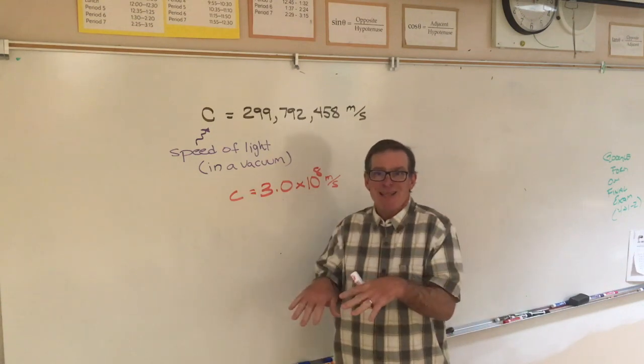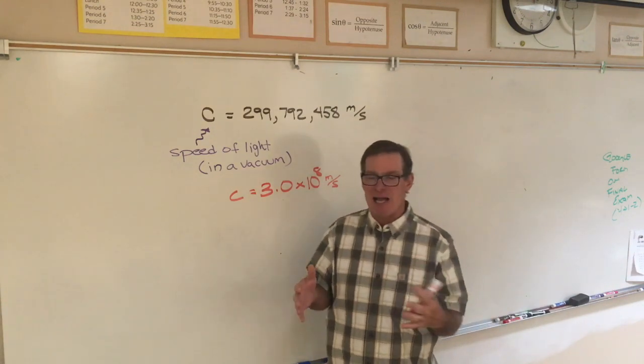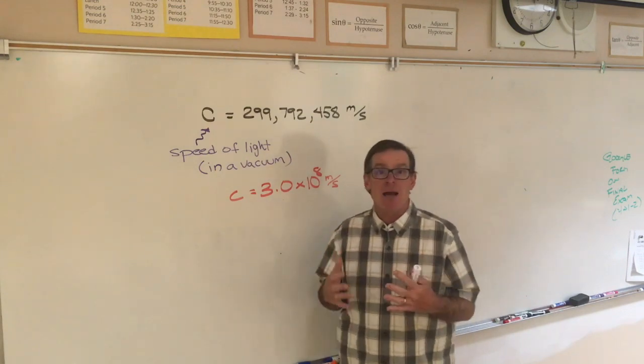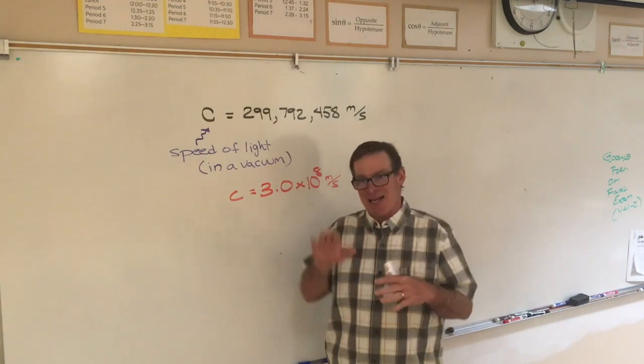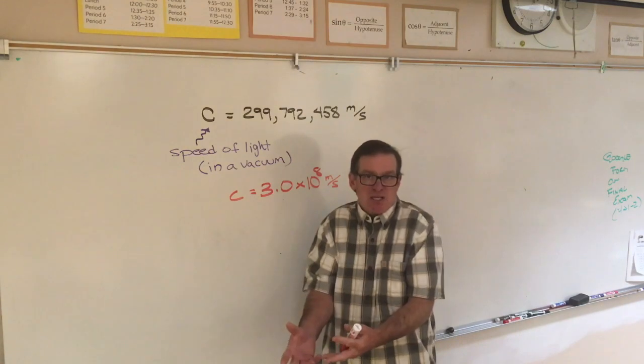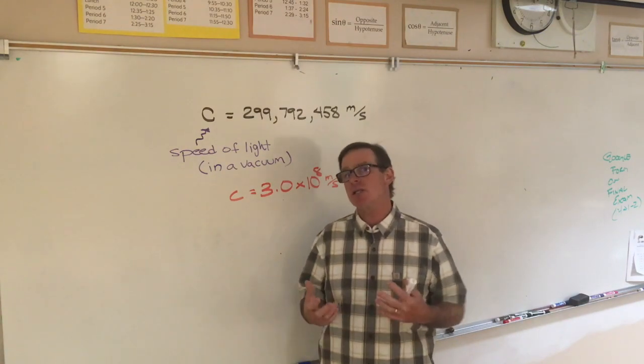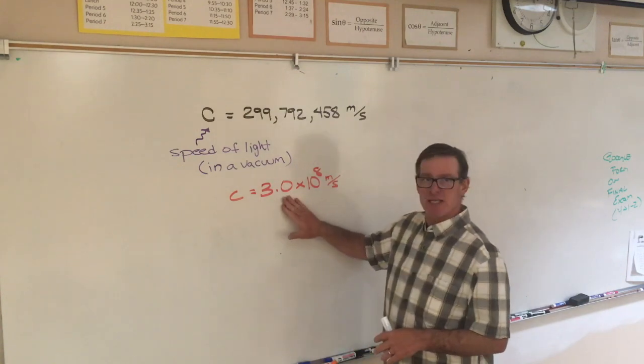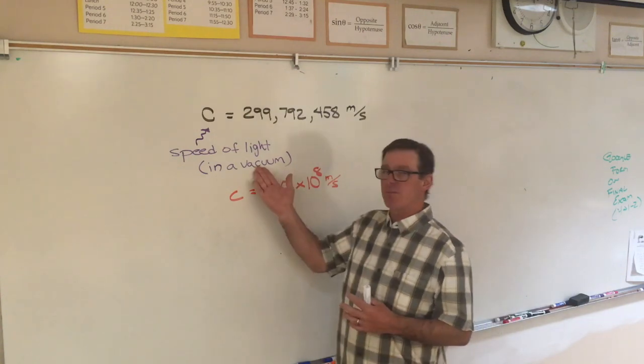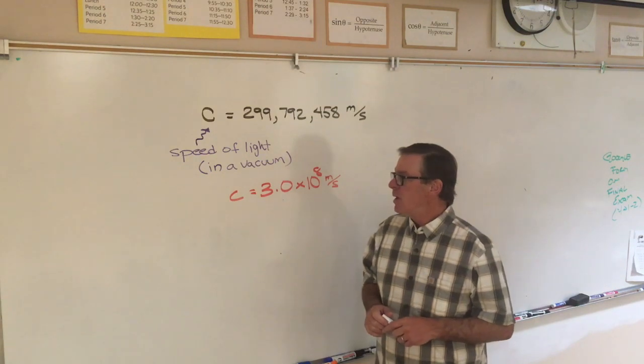The light, as it goes into that material, water, glass, what have you, it interacts. And that interaction of the wave with the material and the electrons in that material causes the light to slow down. So it really only travels at this speed in a vacuum.